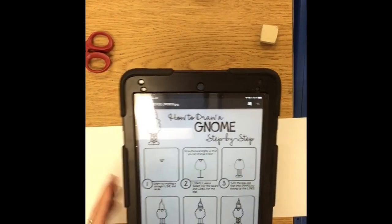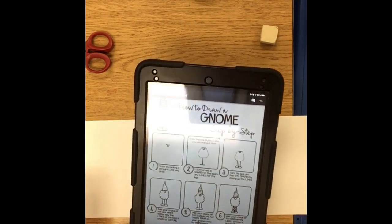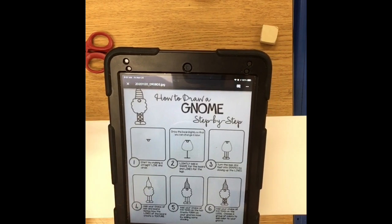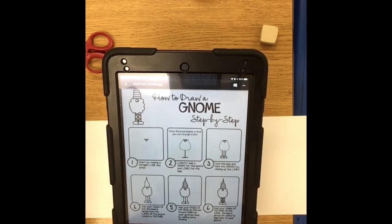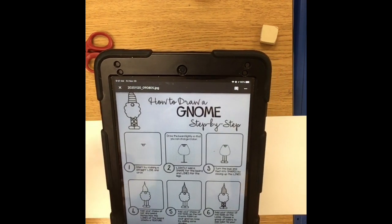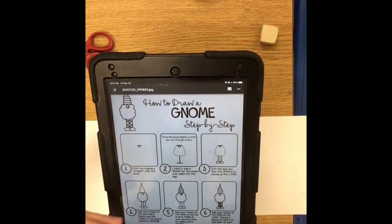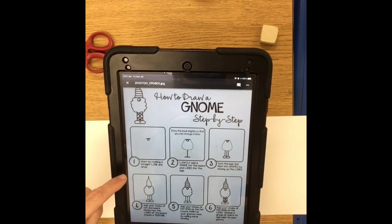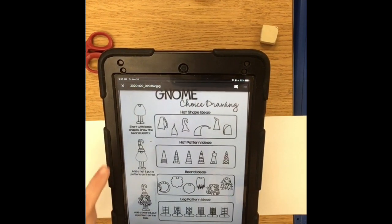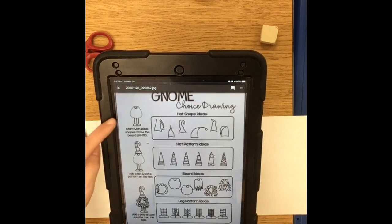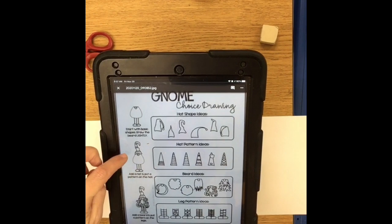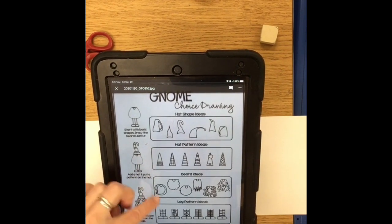All right so included in the directions are two sheets. You can either pull these up on your computer and follow along with these. You can follow along with me with this video. However you choose to do it you can even print it out if you have a printer at home and then just have it there and you can work with me and with the sheet. There is a how to draw the gnome step-by-step and it's really simple and then there are also some choices for you so once you have the basic gnome shape then you're gonna start to choose different hats, patterns for the hats, and then different kinds of beards.